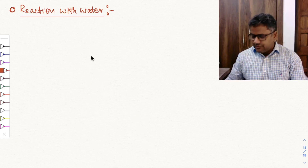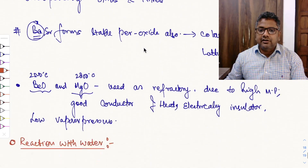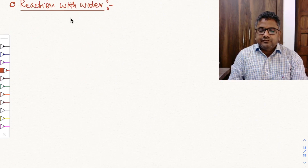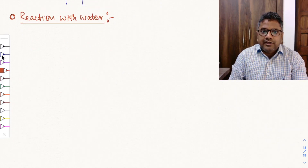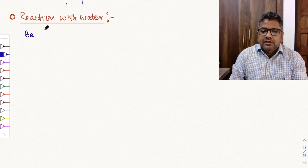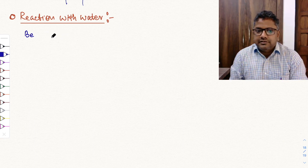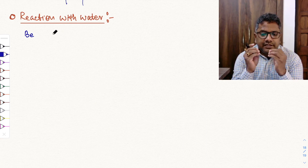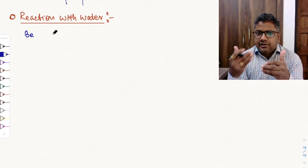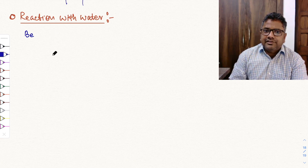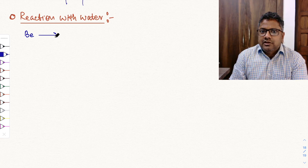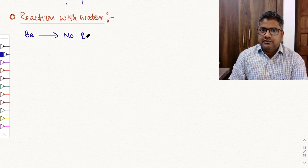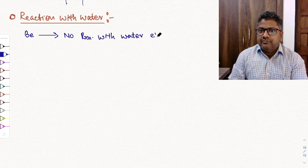In the last lecture we discussed reaction with oxygen. Now, reaction with water. In the second group we have beryllium, and beryllium will not react with water even at high temperature. It is resistant to water even at high temperature — so no reaction for beryllium with water.